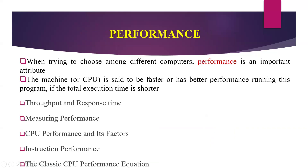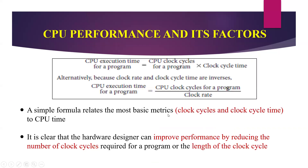So this is the performance. We have totally five parameters available to measure the performance of the system. The first one is called throughput and response time. The second one is measuring performance. The third one is CPU performance and its factors. The fourth one is instruction performance and the fifth one is the classic CPU performance equation.